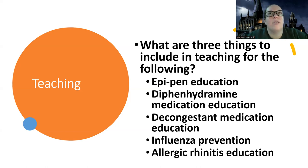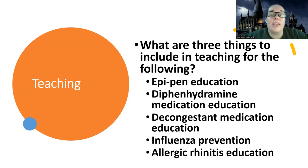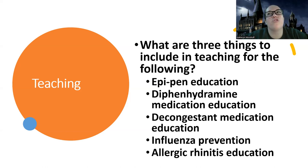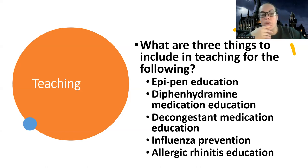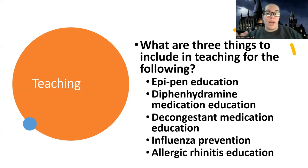For allergic rhinitis education, the big thing is avoiding triggers. Things you can do around your house include removing carpeting, not keeping plants or pets in your room, good ventilation, and keeping it cool and dry rather than too warm. It's great to go through and see if you can act like a patient is sitting in front of you — hey, I need to teach you about this, what would you tell them? What are some of the top points you would want to give that patient?